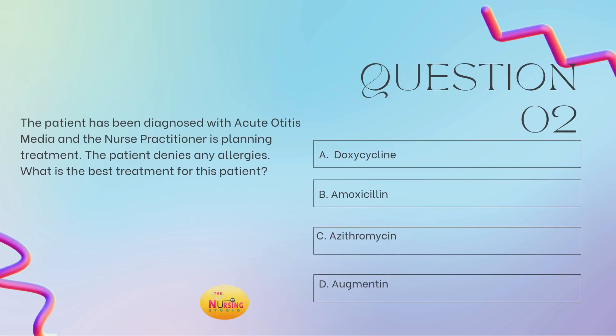Question number two: the patient has been diagnosed with acute otitis media and the nurse practitioner is planning treatment. The patient denies any allergies. What is the best treatment for this patient? Is it A, doxycycline; B, amoxicillin; C, azithromycin; or D, augmentin? Take a moment and tell me what you got.